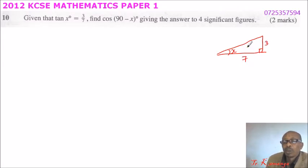So for us to be able to find this angle here, since this angle and this angle add up to 90 degrees in a right-angle triangle, it means this angle here is 90 minus x degrees, which is the one we are required to find the cosine of.